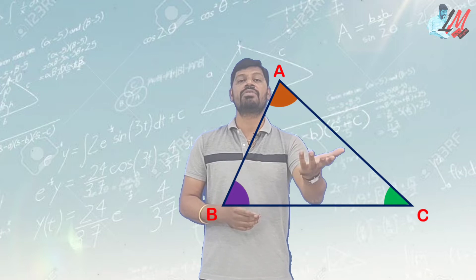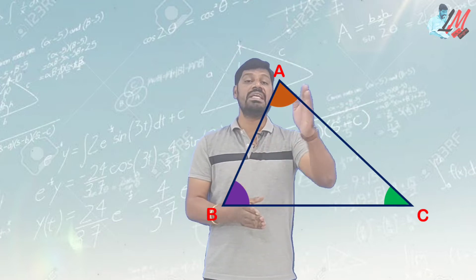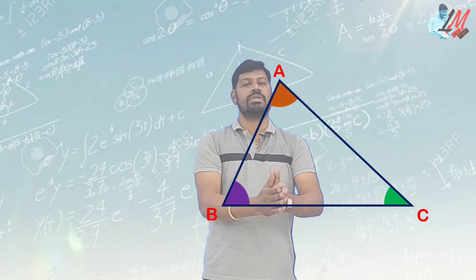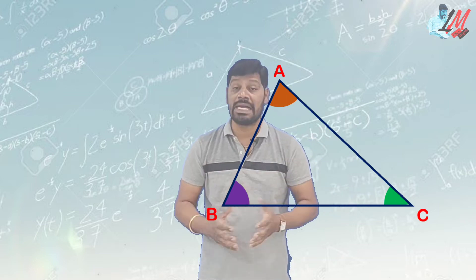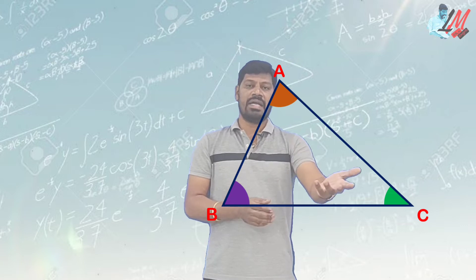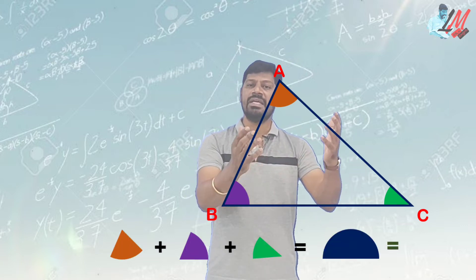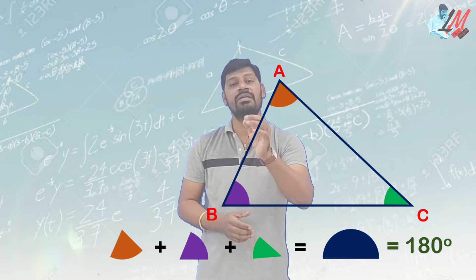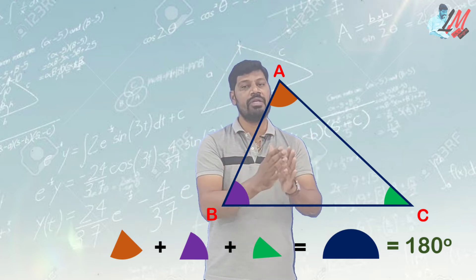We will discuss this shape as a triangle. There are three angles and three sides. We will tell you different types of triangles. Standardly, all three angles in a triangle add up to 180 degrees.